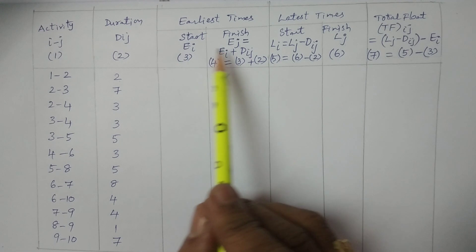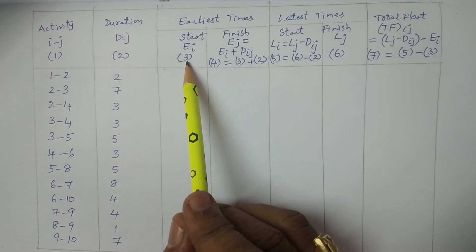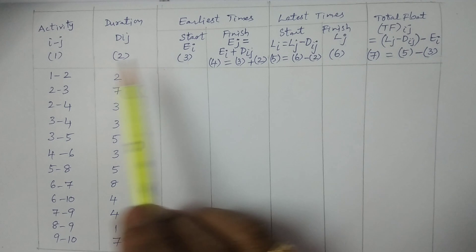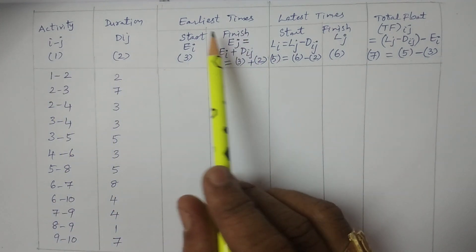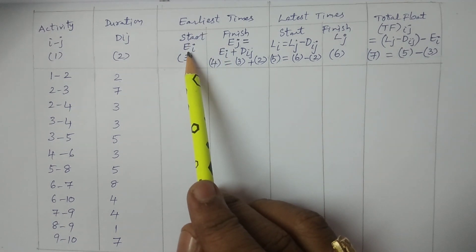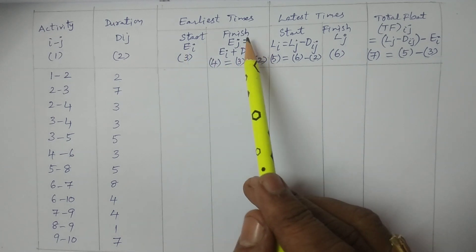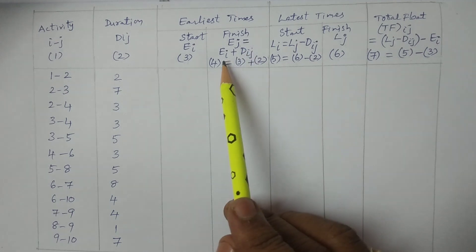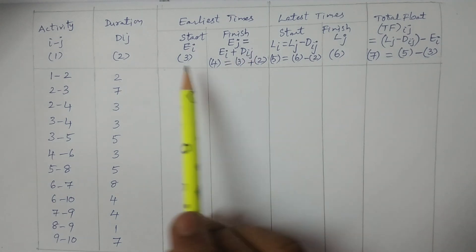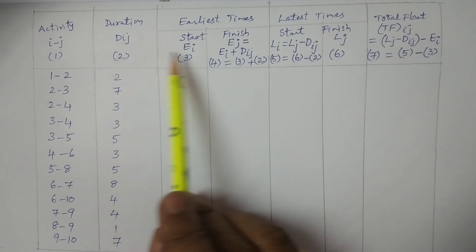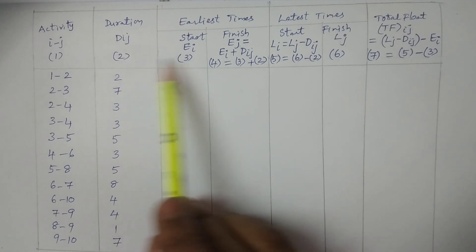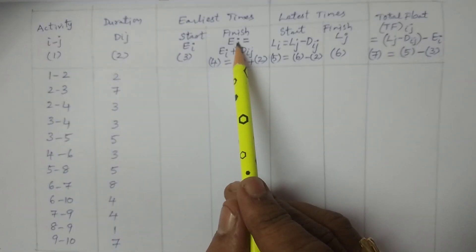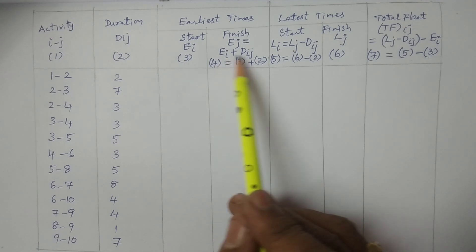I have formulated earliest times, latest times, and total float. Earliest times EI and EJ: EI is taken as the third column, also known as ES. Earliest finish EJ is equal to EI plus DIJ — a simple addition of the third and second columns. EJ is in the fourth column.